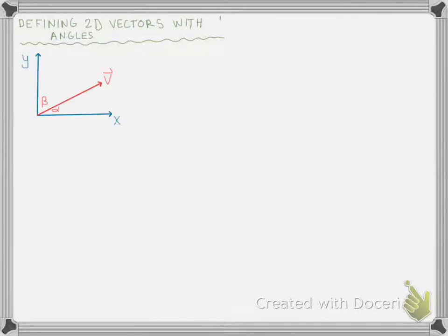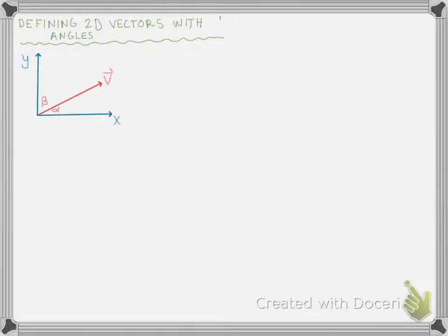Let's say I have some vector v, and it is in the two-dimensional space defined by the x and y axes. That vector is at an angle alpha from the x-axis and beta from the y-axis. And I would like to write v, that vector, in terms of its magnitude and alpha and beta.